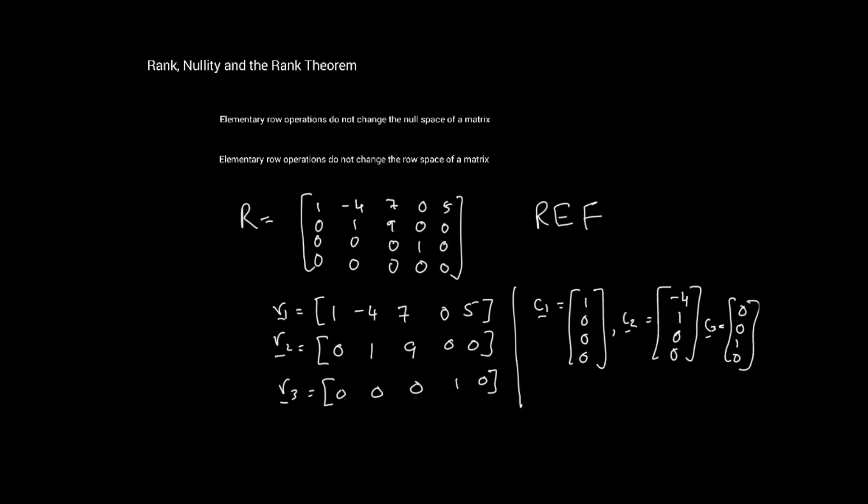Since elementary row operations do not change the null space or the row space of a matrix, we can take any matrix A, reduce it to its REF form, and then pick out the non-zero rows with the leading ones, which form a basis for the row space of R — the reduced version of A. This means the basis vectors for R are in fact the basis vectors for the original matrix that was reduced, giving us a very easy way to find a basis for the row space of a matrix.